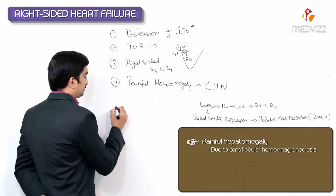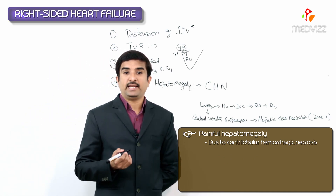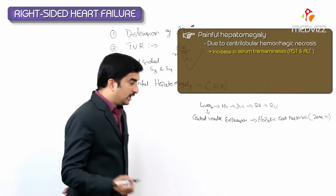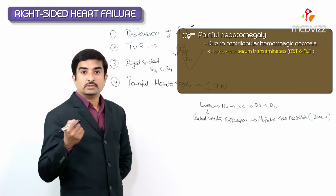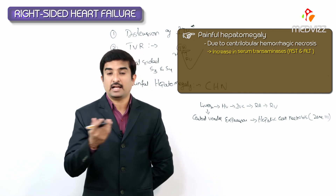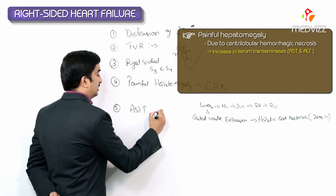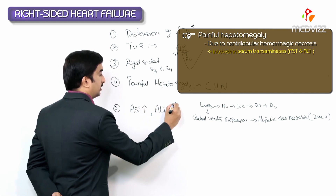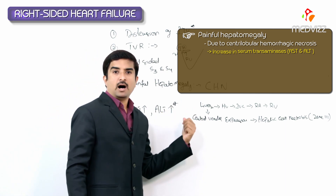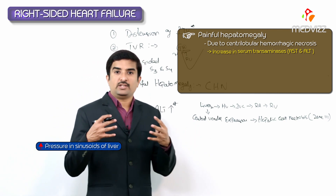Another important feature is an increase in liver enzymes — serum transaminases including aspartate aminotransferase (AST) and alanine aminotransferase (ALT). Both AST and ALT will be elevated, with ALT being markedly increased.